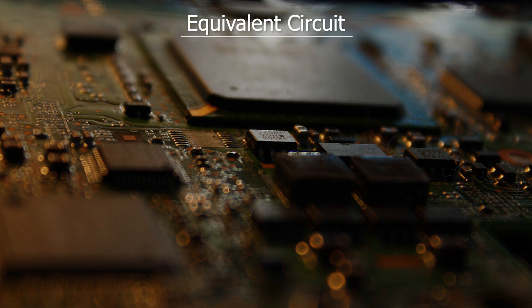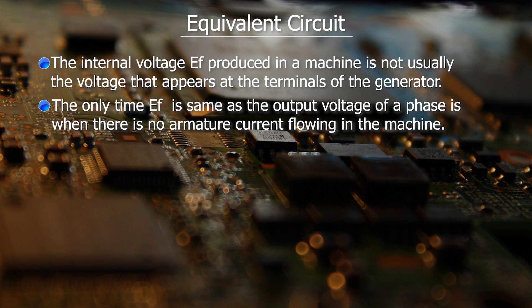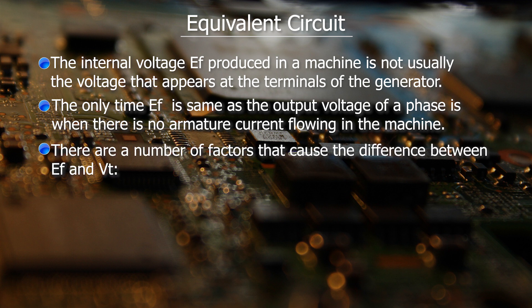The equivalent circuit of the synchronous machine: the internal voltage E produced in a machine is not normally the voltage that appears at the terminal of the generator. The only time E is the same as the output voltage of a phase is when there is no armature current flowing in the machine — no armature current means no voltage drop, and E equals terminal voltage. There are a number of factors that cause the difference between E and V, the terminal voltage.